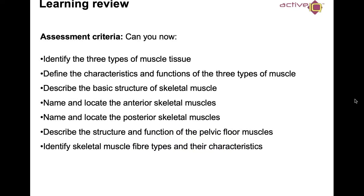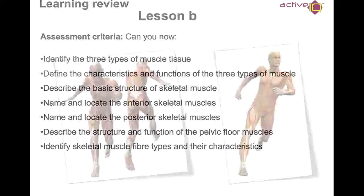We're going to stop there for today's session. It's a short bite-sized chunk — there's going to be a lot more information in your manual, so please have a look at that. This session covers the anterior and posterior skeletal muscles, characteristics and functions of the three types of muscle tissue, and a brief outline of the pelvic floor muscles. I'll see you next time for Part 4 and Muscles Part 2.